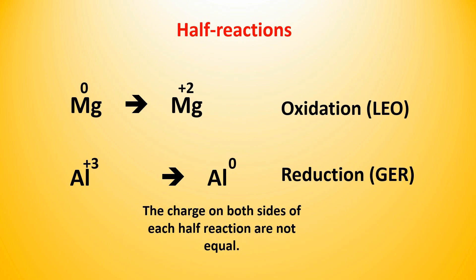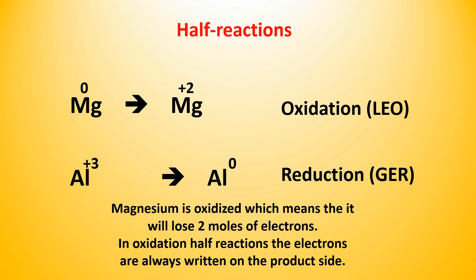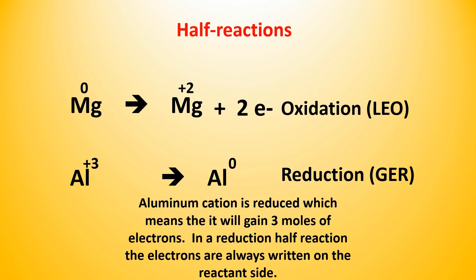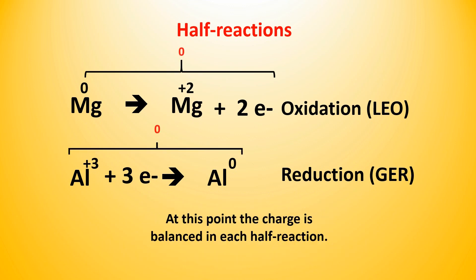The charge on both sides of each half reaction are not equal — where Mg goes from Mg 0 to Mg plus 2, and Al goes from Al plus 3 to Al 0 — so we must balance the charge with electrons. Magnesium is oxidized, which means it will lose 2 moles of electrons. In oxidation half reactions, the electrons are always written on the product side. Aluminum cation is reduced, which means it will gain 3 moles of electrons. In reduction half reactions, the electrons are always written on the reactant side. At this point, the charge is balanced in both half reactions.